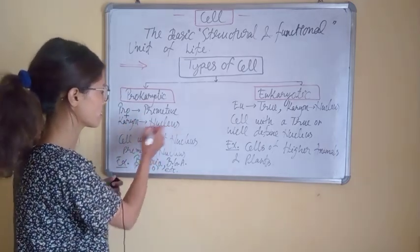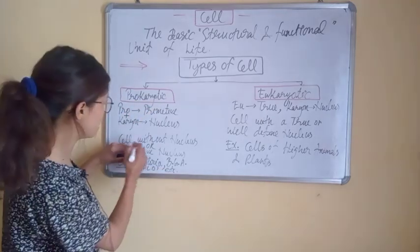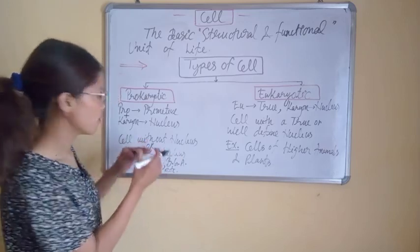It means prokaryotic cell is a cell which has a primitive type of nucleus or no nucleus.